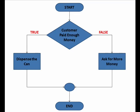In this example, we will look at a flowchart, a visual representation of how a program makes a decision. Let's assume we put some money into a soft drink machine. The machine has one decision to make: did the customer pay enough money to warrant dispensing the can of soda?